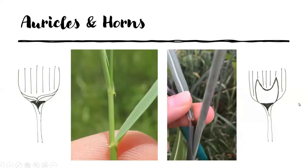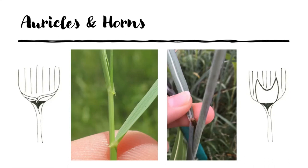A few other structures you may find in the collar region are auricles and horns. Auricles in our area in southern Illinois are not super common — if you go further out west, a lot of the wheat grasses have auricles, making it a more prominent characteristic there. An auricle is essentially an extension that looks like arms that wrap around the stem of the grass. In the drawing here at the base of the leaf blade, these arms come out, and hopefully in the photo you can see there's a little auricle here.